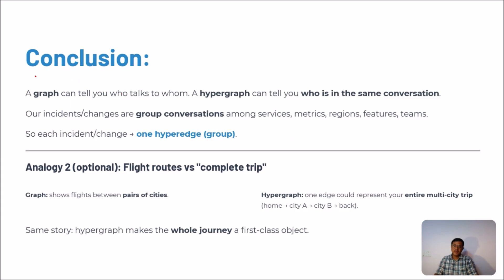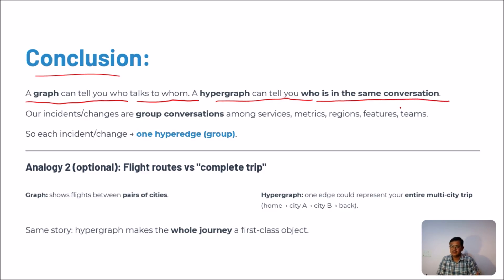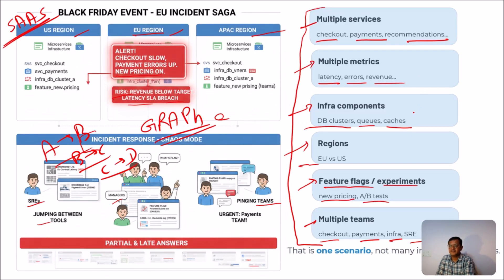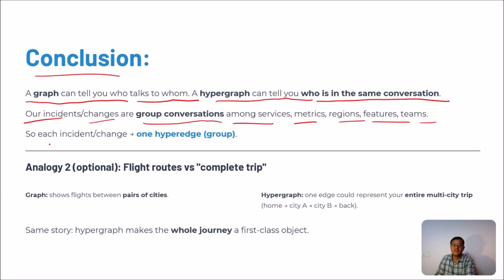To conclude with this example: a graph can tell you who talks to whom, but a hypergraph can tell you who is in the same conversation. In such incidents, only a hypergraph can give the entire scenario in one group — one hyperedge — showing all the relations together so you can see things globally.